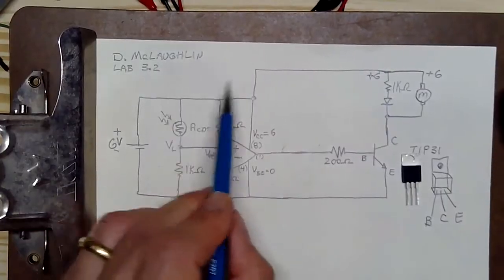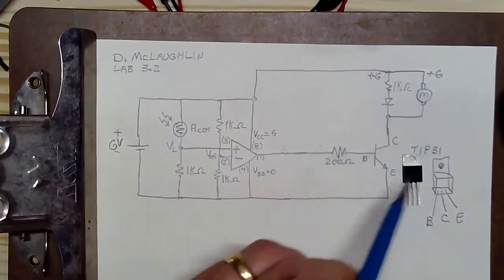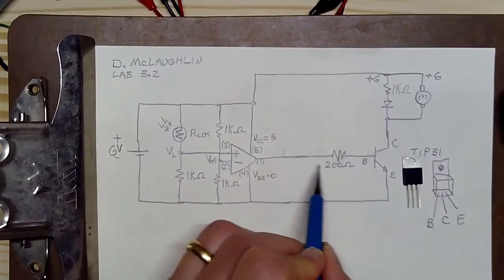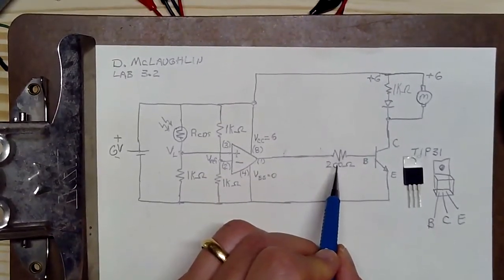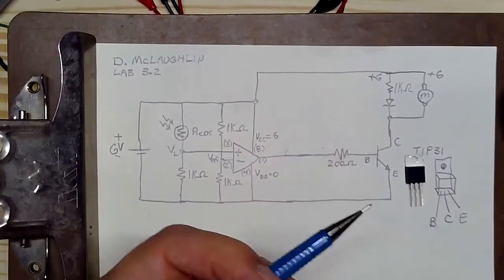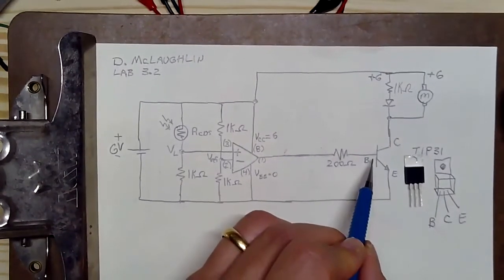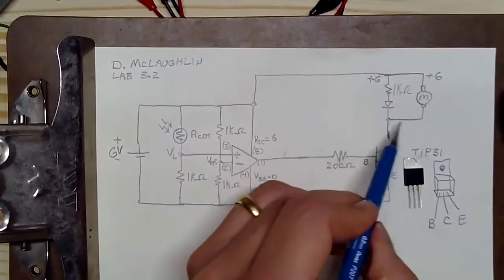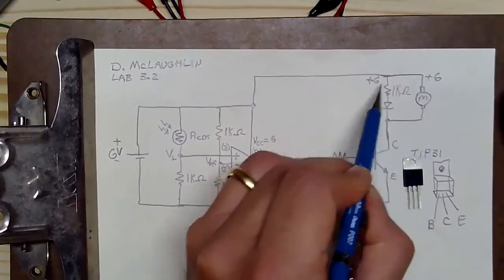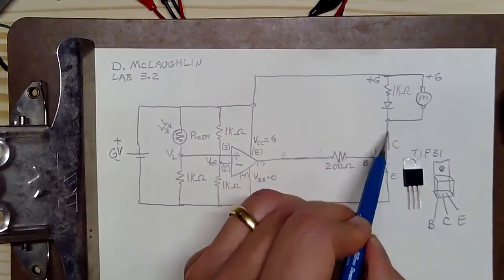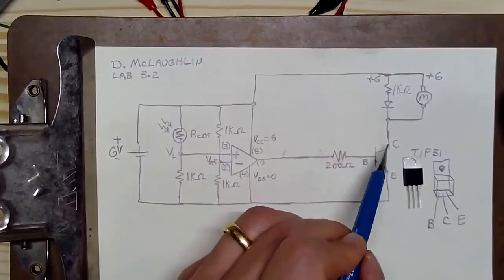So what I'm going to do is take our original circuit and I'm just going to add these to the output. From the output of the op amp, which is pin one, we're going to have a 200 ohm resistor. Our kits don't have 200 ohms, they have 100 ohms, so we're going to use 200 ohms in series. Then we'll go into the base. I'll ground the emitter and then I'll have these components here. The high side will be connected directly to six volts and then the low side will be connected to our collector. Okay, so let's go ahead and build it.